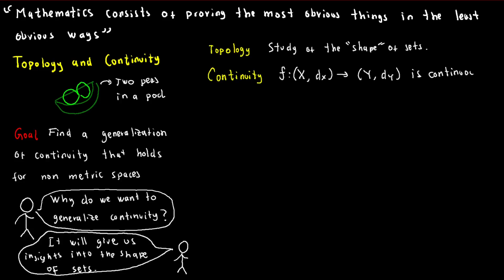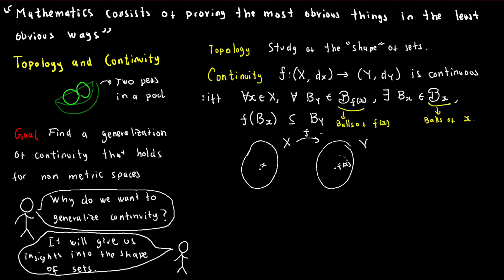Our current definition of continuity can be a bit unwieldy as it relies on open balls. But there is a more elegant way to think about it. We can redefine continuity in terms of open sets. A function f from x to y is continuous if and only if the preimage of every open set in y is open in x.